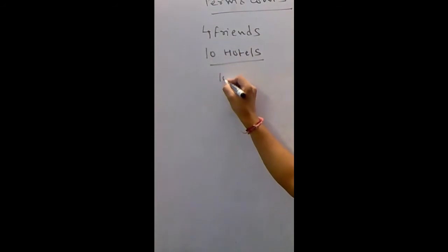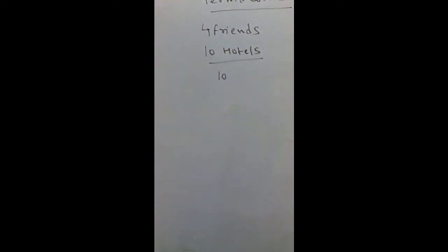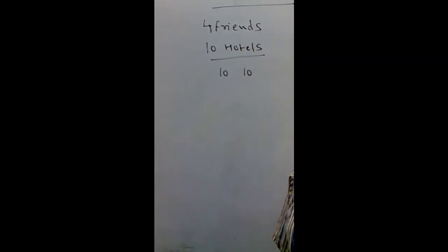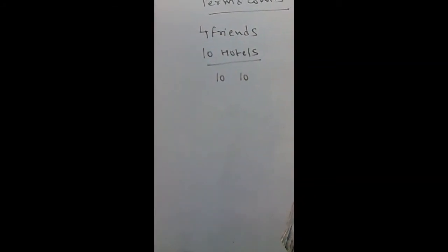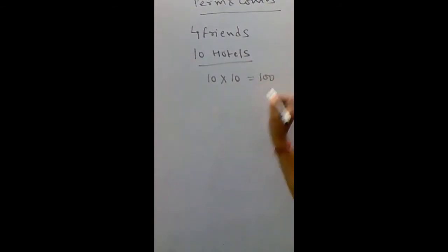First friend can stay in how many ways? Ten ways. Second friend can stay in how many ways? Again, ten ways. There is no restriction as to he can stay in the hotel in which already one friend has stayed or he cannot. Therefore, total number of ways is ten into ten, that is hundred. So, let us see how a hundred ways.